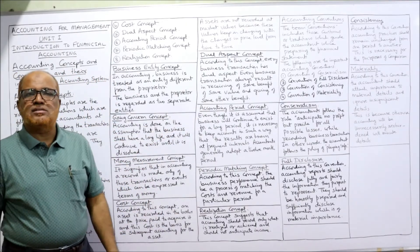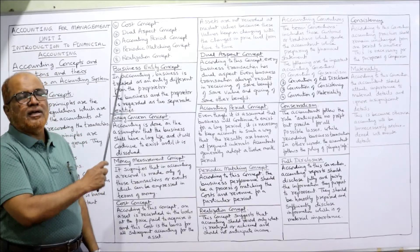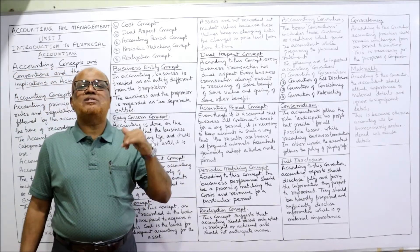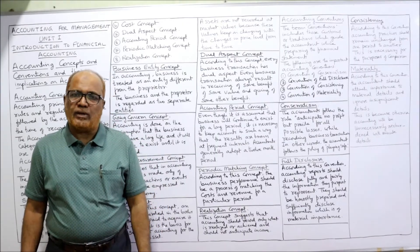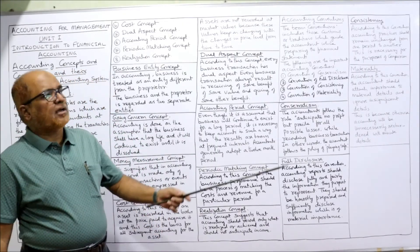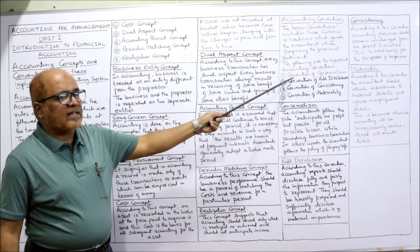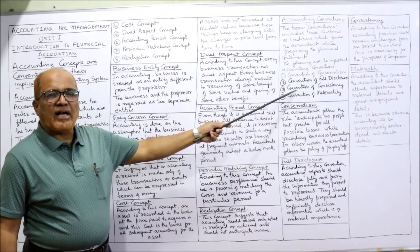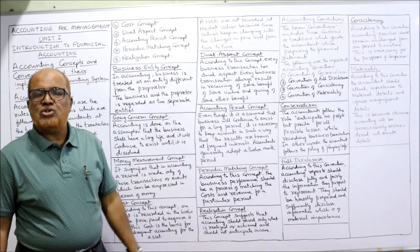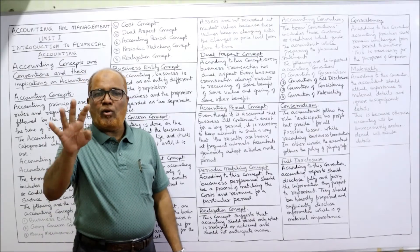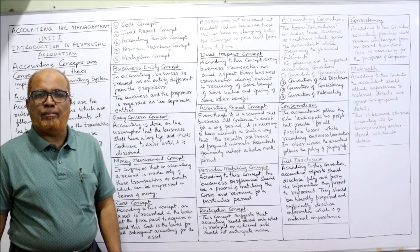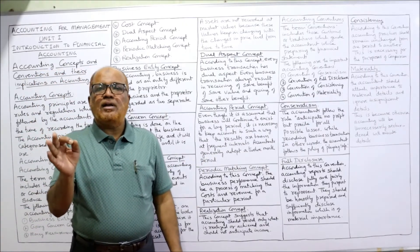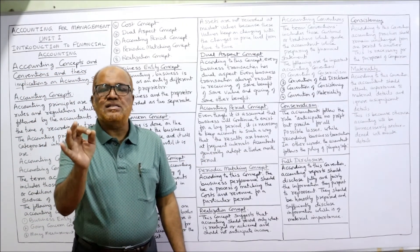The four important accounting conventions frequently followed by accountants are: convention of conservatism, convention of full disclosure, convention of consistency, and convention of materiality. I will now explain each one.